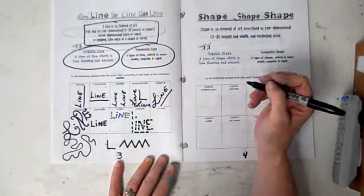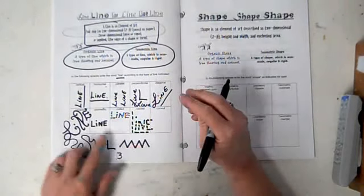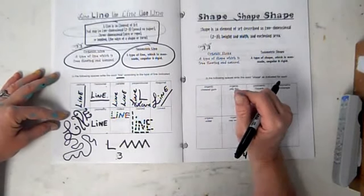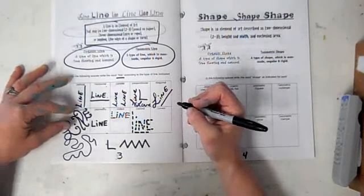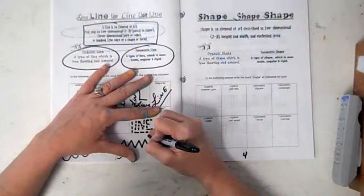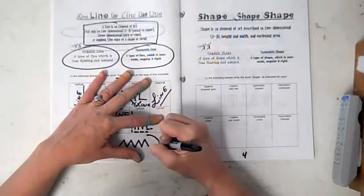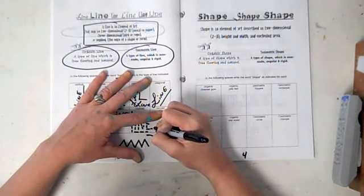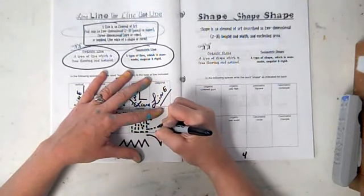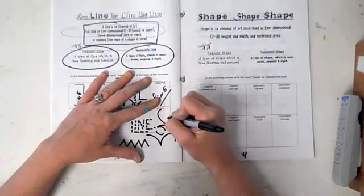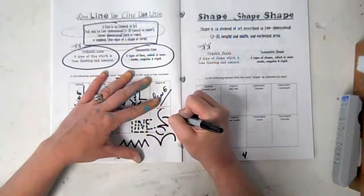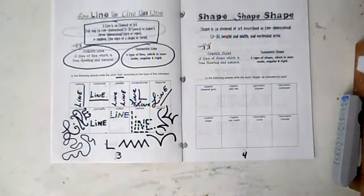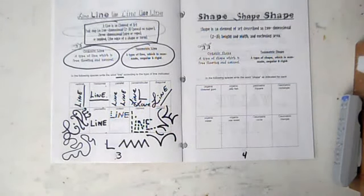And the last one, curved. So I'm going to make it very curvy. The curvy one is going to be quite a bit like my organic one, but I'm going to make it a little bit different. If you need to go outside the boxes, it's fine too. L-I-N-E, line with curved lines. Okay, go ahead and finish your page on line.